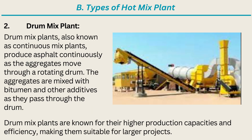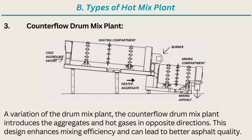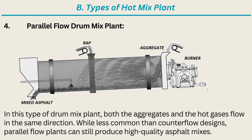Type two, drum mix plant — also known as continuous mix plants, these produce asphalt continuously as aggregates move through a rotating drum, where they are mixed with bitumen and other additives. Drum mix plants are known for higher production capacities and efficiency, making them suitable for larger projects. Type three, counterflow drum mix plant — a variation where aggregates and hot gases are introduced in opposite directions, enhancing mixing efficiency and asphalt quality. Type four, parallel flow drum mix plant — both aggregates and hot gases flow in the same direction; while less common than counterflow designs, these can still produce high-quality asphalt mixes.